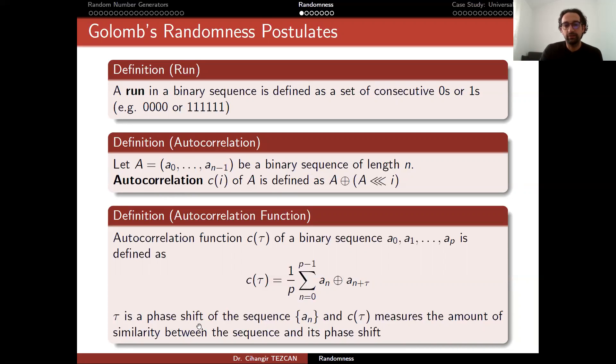Tau is a phase shift of sequence of the an, and c tau measures the amount of similarity between the sequence and its phase shift. So here we are performing XOR operation, but this summation operation is actually an integer summation. So here you will get an integer, some number between zero to p minus one, but then you will divide it with one over p. So at the end you will get something between zero and one. We will give some examples in a minute.